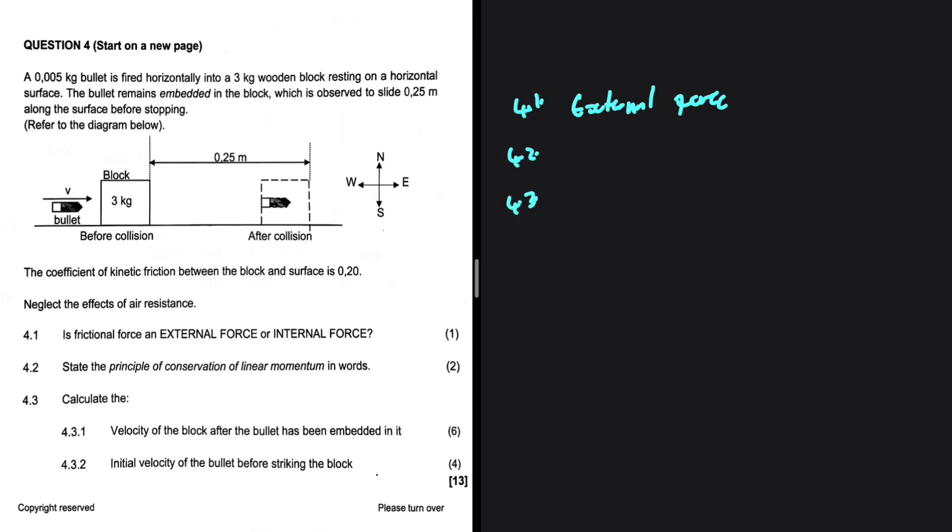What about 4.3 and 4.3.1? In 4.3.1, we're supposed to calculate the velocity of the block after the bullet has been embedded in it. There's a frictional force between the block and the surface, so we cannot use the conservation of linear momentum. I'm not so sure what we're going to use, but I know that when I write the variables down, the approach is going to reveal itself. So let's go ahead and jot down the information we have and see which route we can take.